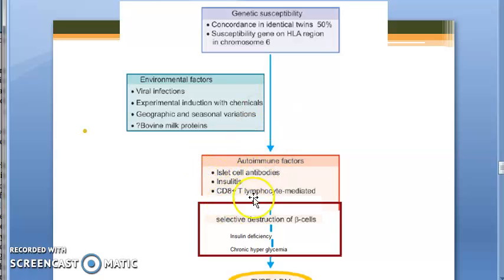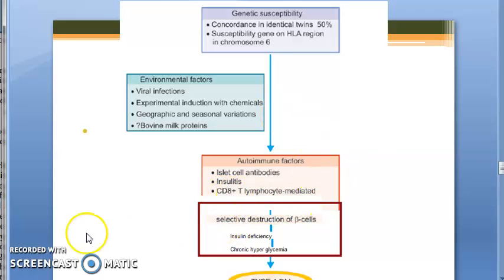This leads to islet cell antibodies and insulitis. Insulitis is defined as lymphocytic infiltration in and around the pancreatic islets.